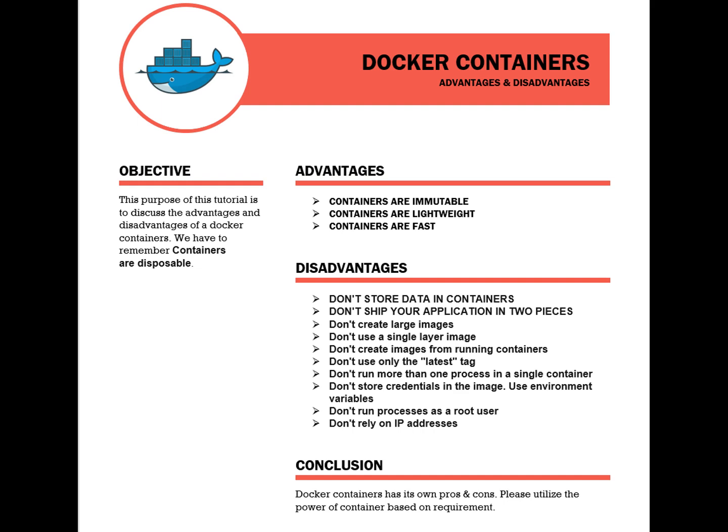Number one: don't store data in containers. A container can be stopped, destroyed, or replaced. An application version 1.0 running in a container should be easily replaced by version 1.1 without any impact or loss of data. For that reason, if you need to store data, do it in a volume. You should always take care that two containers don't write data to the same volume, as it could cause corruption. Make sure your application is designed to write to a shared data store.